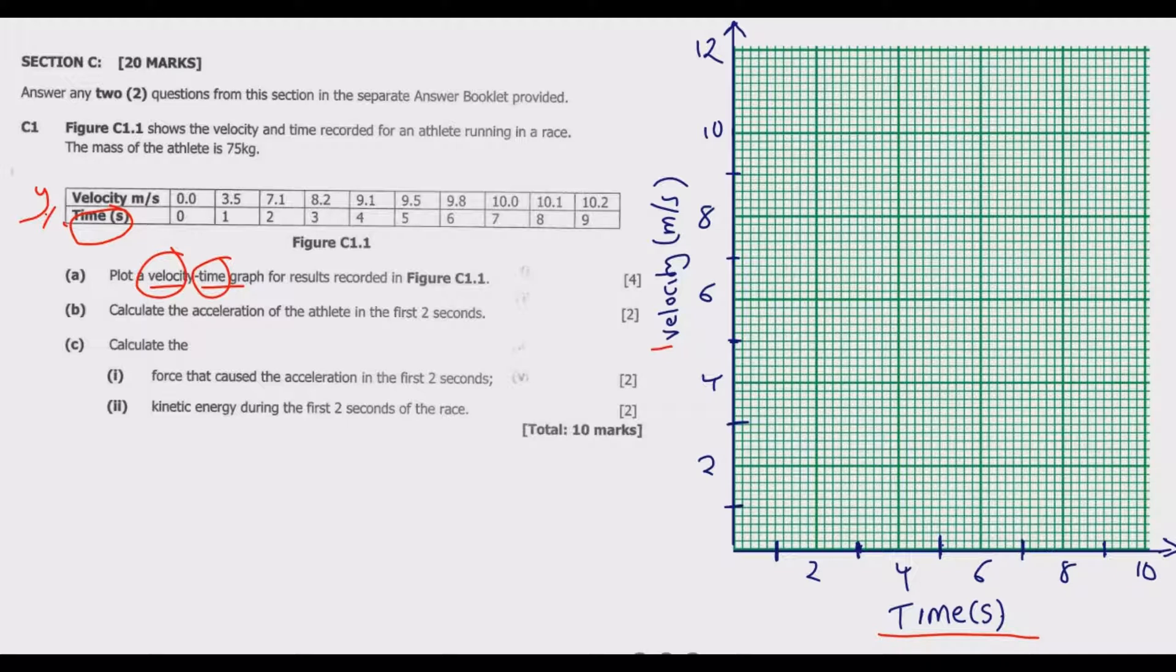Having done that, let us now put these values. We have zero comma zero which is basically at this point. Then we have one comma 3.5, so one is here then 3.5 is just halfway between 4 and 3, so it will be basically somewhere here. Then we have two comma 7.1, which is basically two, then seven is here then 7.1 should be somewhere here. Then we have three comma 8.3, so three is in the middle then 8.3 is somewhere at this point.